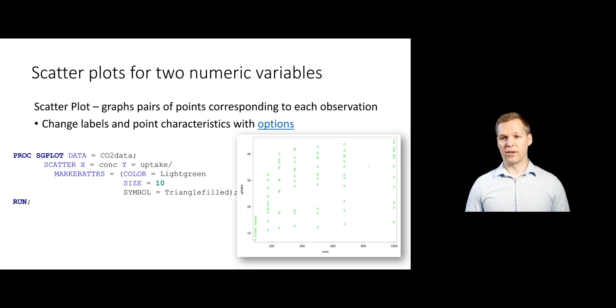So this graph here, although not very readable due to the light green, we've changed the color to light green, the size of the points to be a little bit bigger, and then the symbol to be a filled in triangle. And you can find all of the different symbols that you could use in the options that are linked here.